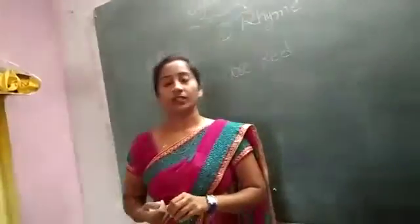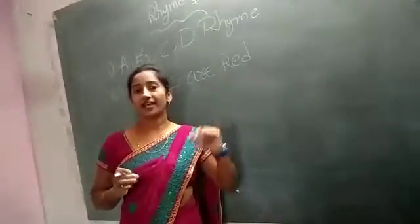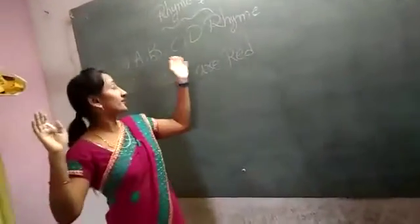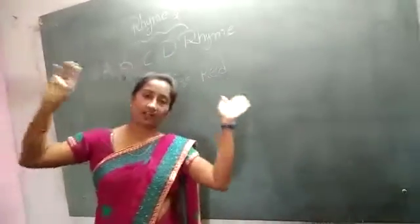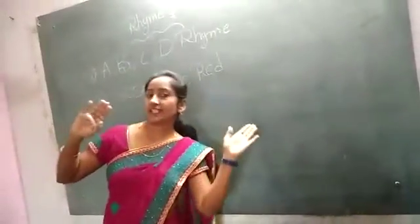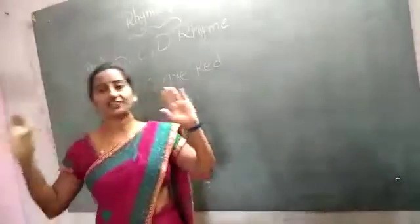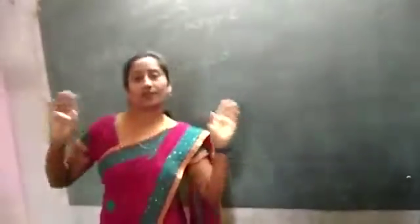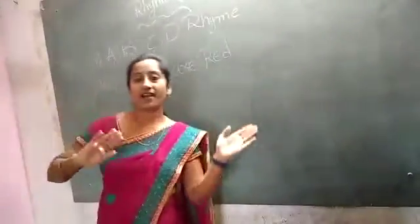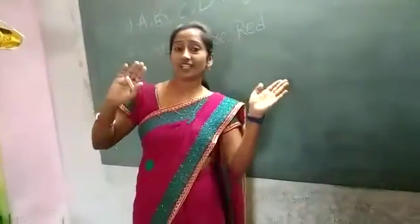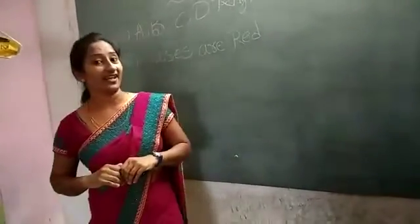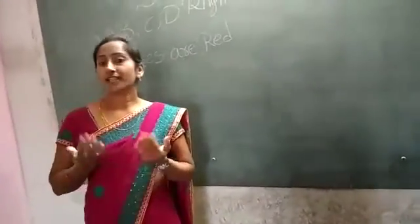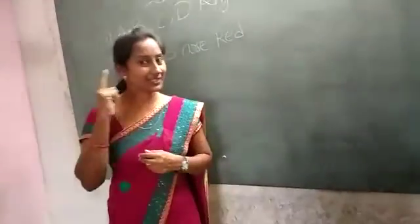Okay, very good. Now start the rhyme. Raise your hand. Come on: A, B, C, D, E, F, G, H, I, J, K, L, M, N, O, P, Q, R, S, T, U, V, W, X, Y, Z. Now I know my ABCs, next time won't you sing with me. Next Monday morning, come to school, I will teach you ABC.